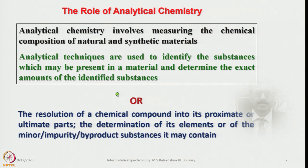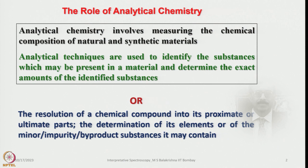That means it involves both qualitative and quantitative analysis of an unknown sample obtained from natural resources. Or it can also be described as the resolution of a chemical compound into its proximate or ultimate parts — that is, the determination of its elements or of the minor impurities, byproducts or substances it may contain. All these details come from analytical chemistry, and spectroscopy is a branch of the analytical methods.